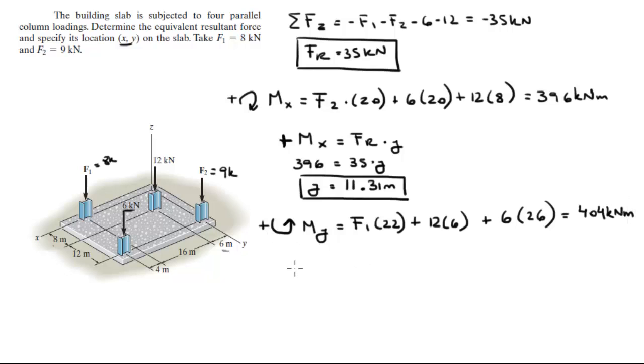And since we assume counterclockwise is positive, M of y is equal to F of r times x. So, we just substitute the numbers and this is 404. F of r is 35. X is x. You solve for x by dividing 404 by 35 and you get that the x coordinate comes out to be 11.54 meters.